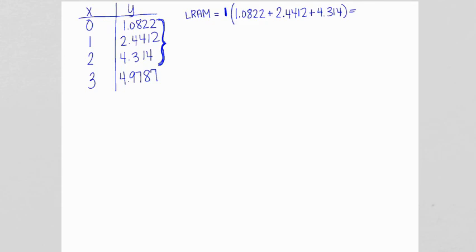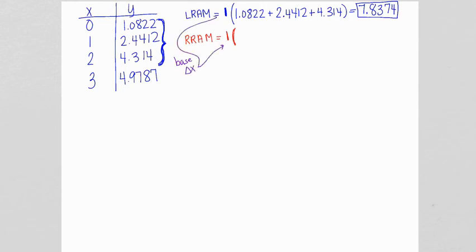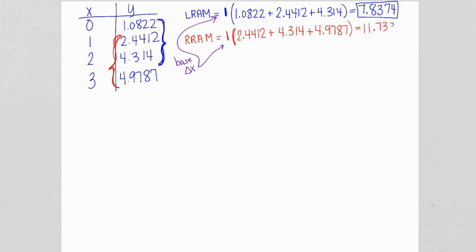Adding 1.0822 plus 2.4412 plus 4.314 gives an LRAM of 7.8374. For the RRAM, I use the same table but drop the very first y value. The base is our delta x of 1, and the heights are 2.4412, 4.314, and 4.9787. Plugging those into the calculator gives an RRAM of 11.7339 — I'm glad to see it's an overestimate, larger than the LRAM.